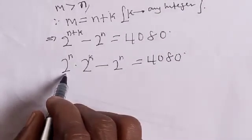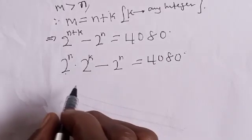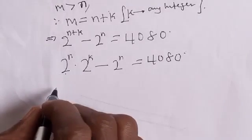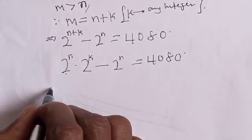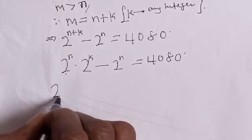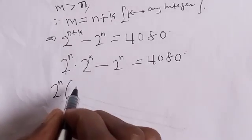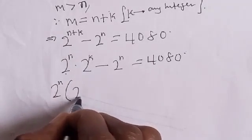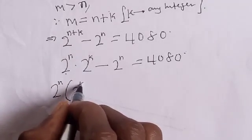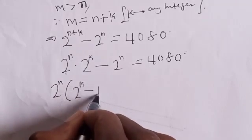Therefore we have 2 raised to power n here and 2 raised to power n here — we can factor 2 raised to power n out. This can be written as 2 raised to power n into (2 raised to power k minus 1).